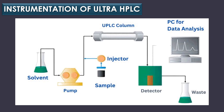Instrumentation of ultra HPLC includes: solvent delivery system, sample injection, UHPLC columns like BEH C18 and C8 columns, BEH shield R18 columns, BEH phenyl columns and BEH amide columns, and detectors like the tunable ultraviolet detector, photo diode array detector, evaporative light scattering detector, fluorescence detectors, and a PC for data analysis.